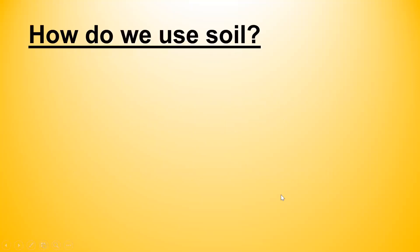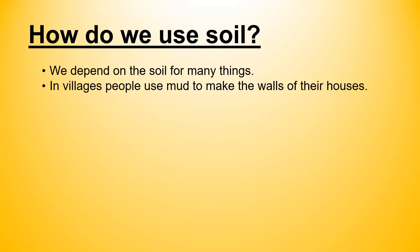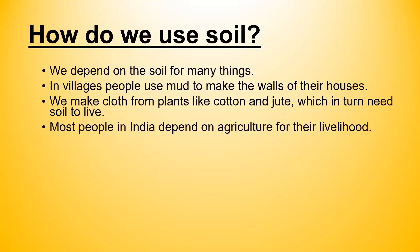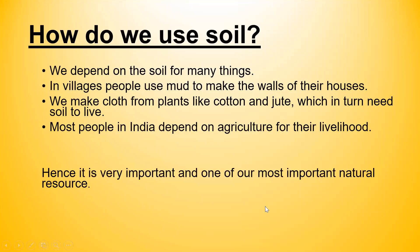How do we use soil? We depend on the soil for many things. In villages, people use mud to make the walls of their houses. We make cloth from plants like cotton and jute, which in turn need soil to live. Most people in India depend on agriculture for their livelihood. Hence, soil is one of our most important natural resources.